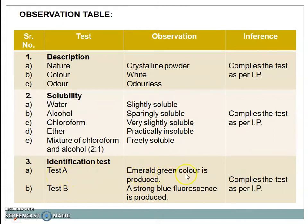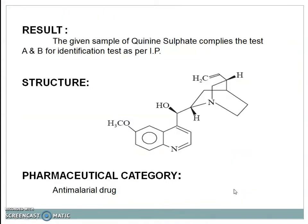Test A gives emerald green color and test B produces a strong blue fluorescence on treatment, that means it complies the test as per IP. Result: the given sample of quinine sulfate complies the test A and B for identification test as per IP. This is the structure of quinine sulfate and the pharmaceutical category is antimalarial drug.